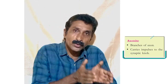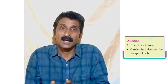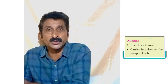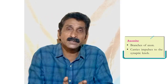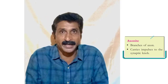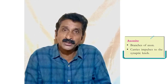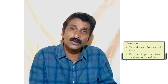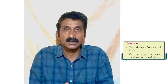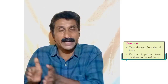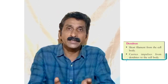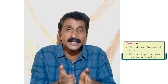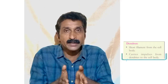The second part of the neuron is axonite. Axonites are the branches of axon and they carry messages to the synaptic node. The third part of the neuron is dendron. Dendron are the short filaments arising from the cell body, and they carry messages from dendrites to the cell body.